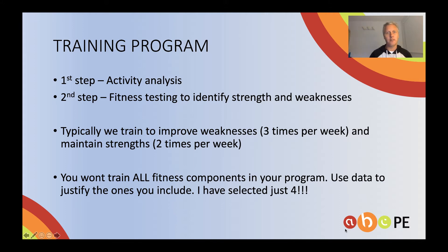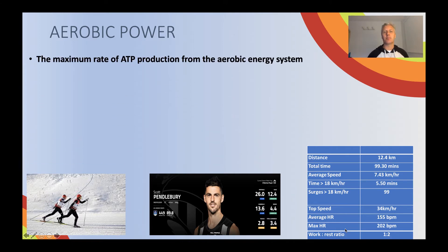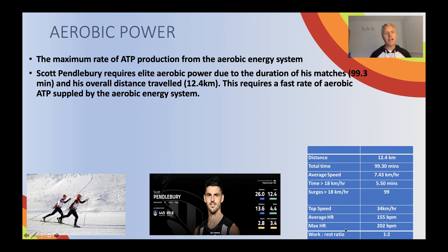In my program I'm only going to choose four fitness components to train. The first one I'm going to choose is aerobic power. For all of these fitness components you're going to need to go through in detail in the text so that you know the definition — in this case, the maximum rate of ATP production from the aerobic energy system. But more importantly, you're going to need to be able to justify that aerobic power is important for your athlete.